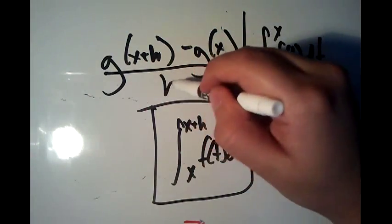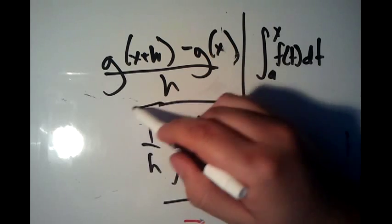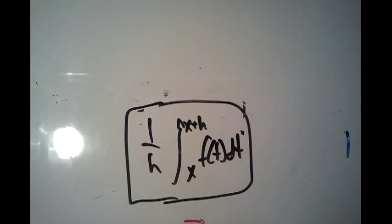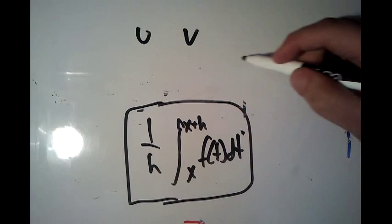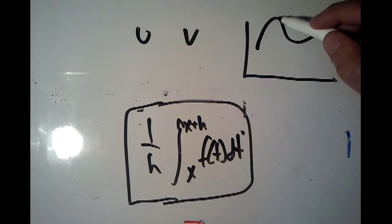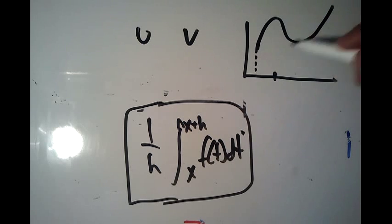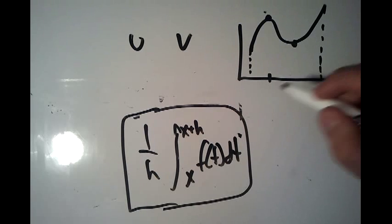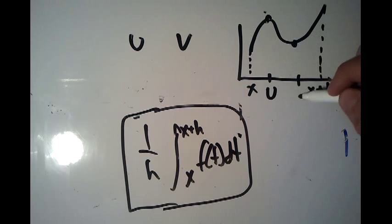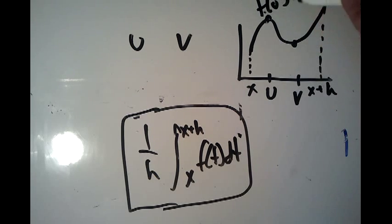Now we're going to divide that result by h, so we put a one over h in front of it. We also need to define a couple of things: we're going to define points u and v. On the graph of f of t, over the closed range from x to x plus h, there is a maximum and a minimum. The x-coordinate of the maximum we'll label u, and the x-coordinate of the minimum we'll label v. So the maximum value is f of u and the minimum value is f of v.